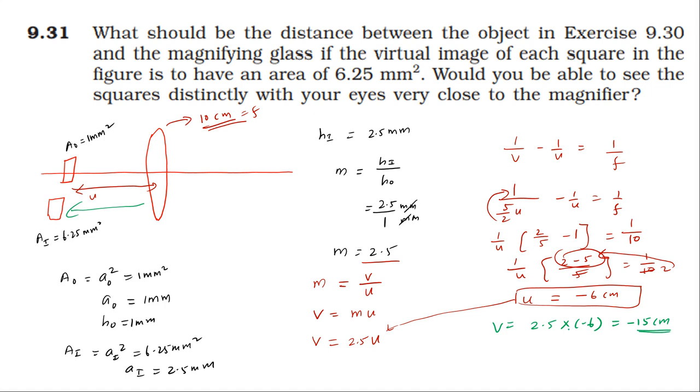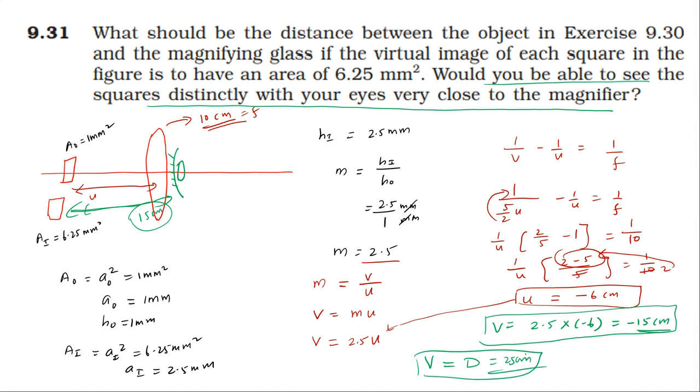Now, would you be able to see the squares distinctly with your eyes very close to the magnifier? The image is at 15 centimeters distance. For the image to be clear, the image distance should be at least the least distance of distinct vision, which is 25 centimeters. Since 15 centimeters is less than 25 centimeters, we cannot see the image distinctly.